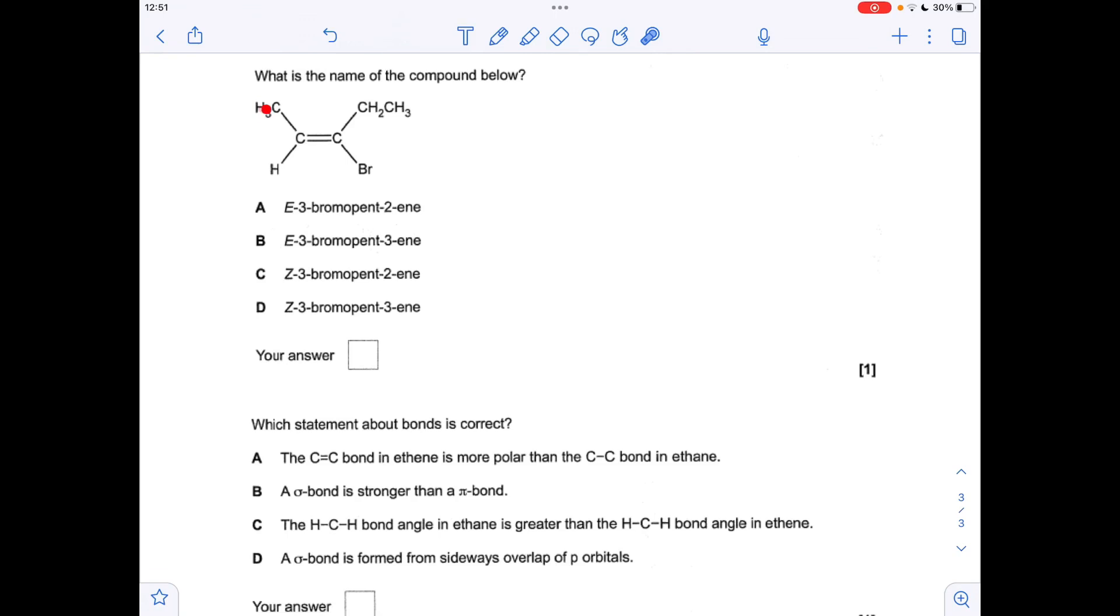So on the left hand carbon, the priority group is the methyl group. Because carbon has a higher atomic number than hydrogen. And on the other carbon atom of the double bond, bromine takes priority. Because it's got a higher atomic number than carbon. So the priority groups are on opposite sides of the double bond. So it's an E isomer. Which means option A is the answer. E-3-bromopent-2-ene.